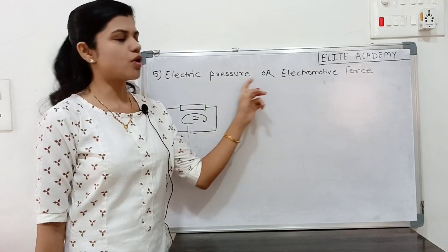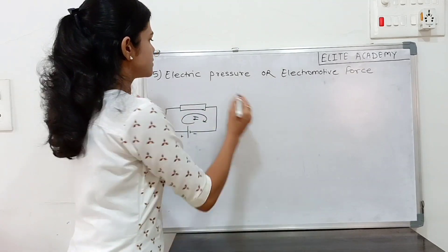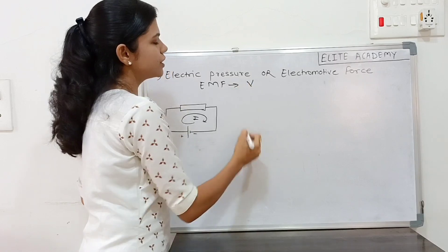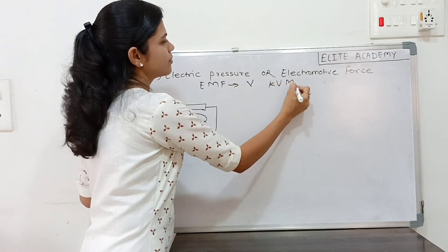Fifth one, electric pressure or electromotive force. This is also called as EMF. It has a unit of volt, kilovolt, megavolt.